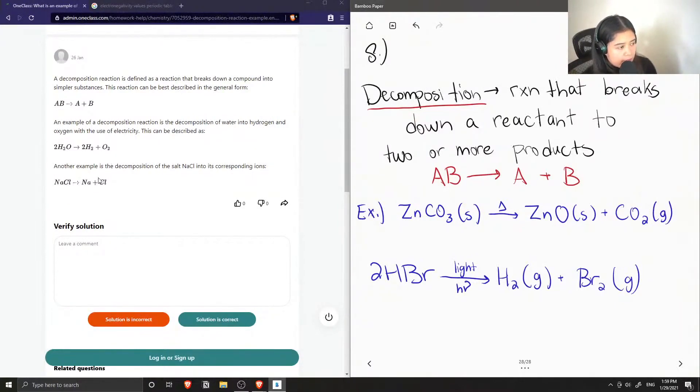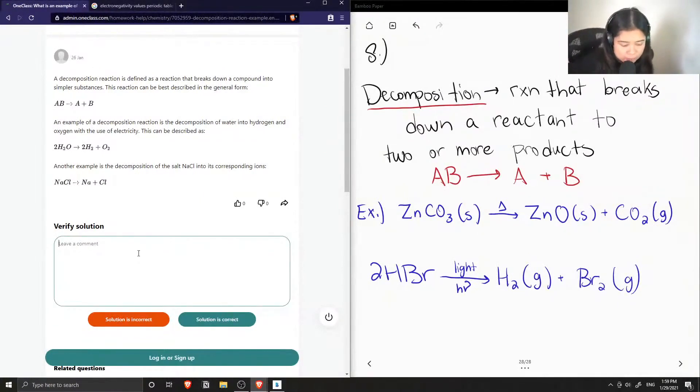Another example is the decomposition of the salt, sodium chloride, into its corresponding ions. So sodium chloride makes sodium plus plus chlorine minus. So this solution is correct.